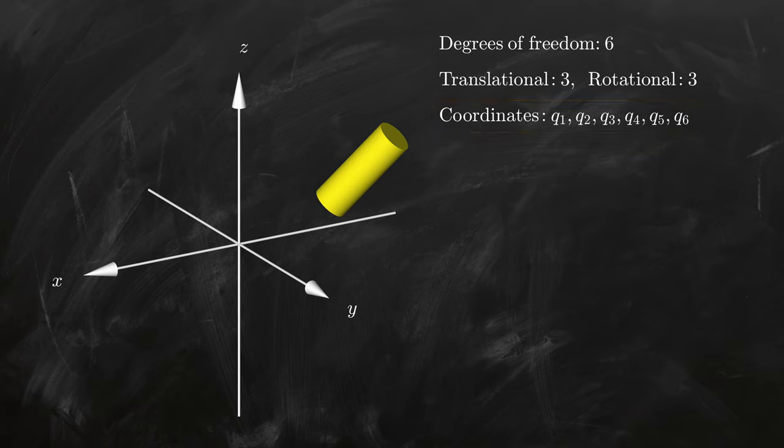Luckily, we rarely need all six, since a given mechanical system usually has one or several constraints. Each such constraint reduces the number of degrees of freedom by one, since it essentially allows us to write one coordinate in terms of the other coordinates, or even demands that some coordinate is always constant.